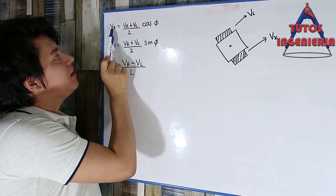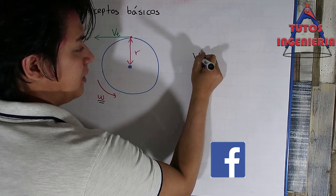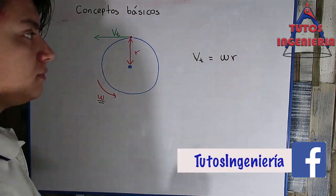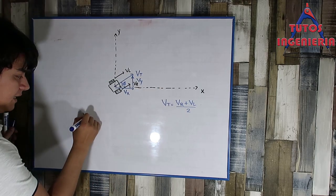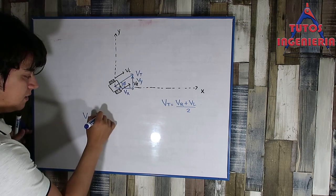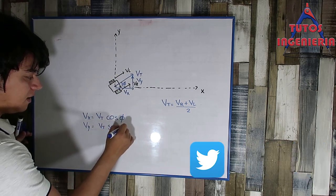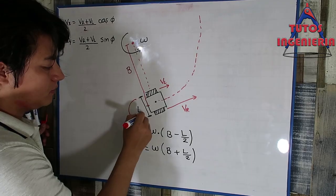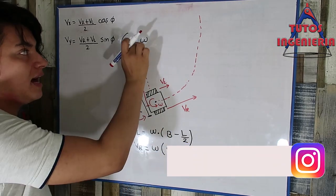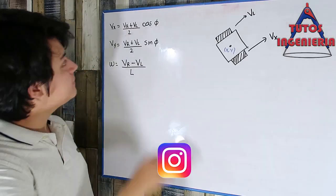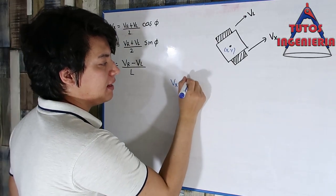This video was long, but it was important. Now we know the equations that describe the behavior of our car. This model will be used on the microcontroller. In the next video, we are going to summarize the equations and find the key expressions we are going to use on the microcontroller.